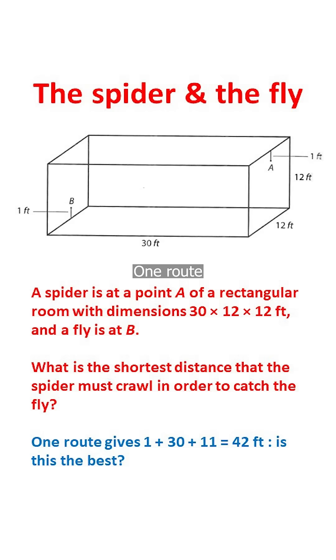One route is for the spider at A to descend to the floor, that's 11 feet, cross it, that's 30 feet, and then climb up to the fly at B, which is one foot, giving 42 feet in total.